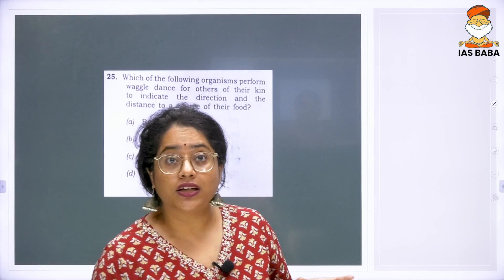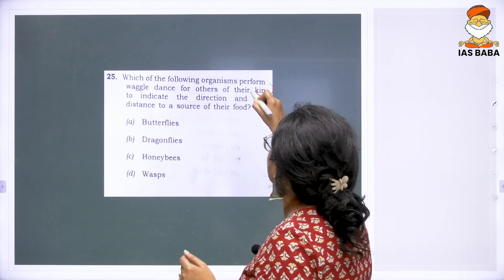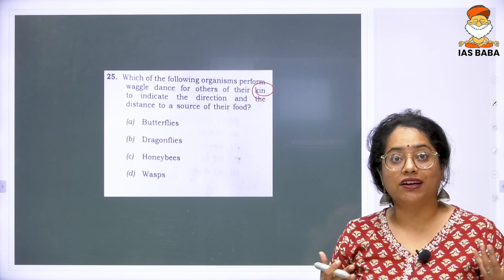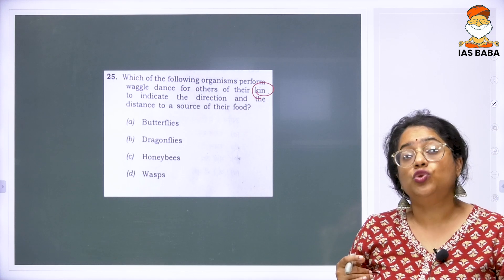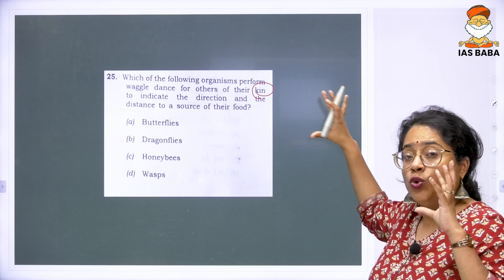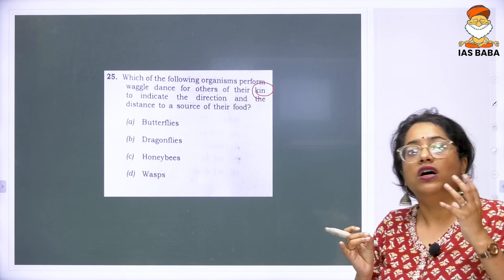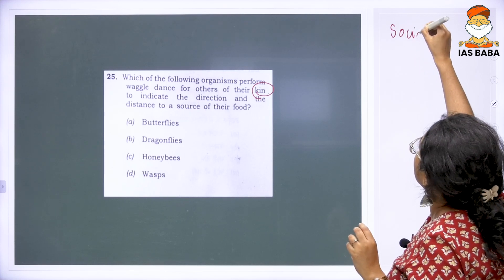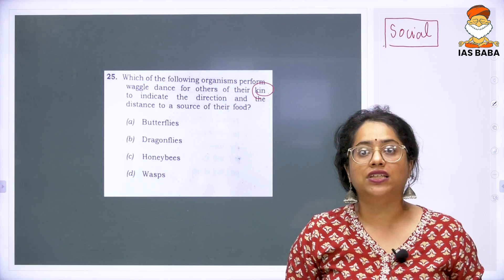The question reads: which of the following organisms perform waggle dance for others of their kin — meaning others in their same group, like relatives — to indicate the direction and the distance to a source of their food? When you read the question, you get a fair idea that we are talking about a species that is very social in nature, social to the point where it is extensively studied.